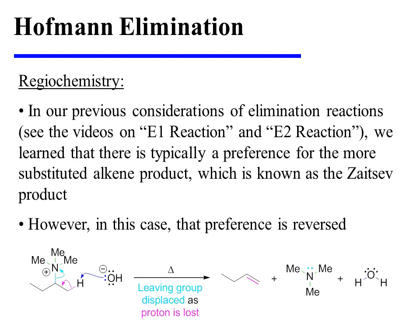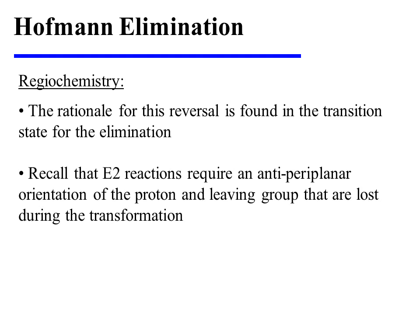In our previous considerations of elimination reactions, in the videos on E1 and E2 reactions, we learned that there is typically a preference for the more substituted alkene product, which is known as the Zaitsev product. However, in this case that preference is reversed. The rationale for this reversal is found in the transition state for the elimination. Recall that E2 reactions require an anti-periplanar orientation of the proton and the leaving group that are lost during the transformation.